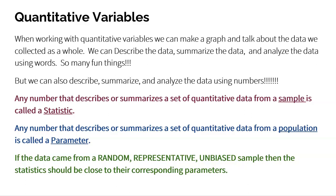Not only can we use words — when you talk about shape you can definitely use words — but when you talk about the center, we actually have numbers that can tell us what the center is. Any number that describes or summarizes a set of quantitative data from a sample is called a statistic. Any number that describes or summarizes a set of quantitative data from a population is called a parameter. Typically we can't get all the data from a population, so typically we work with statistics.